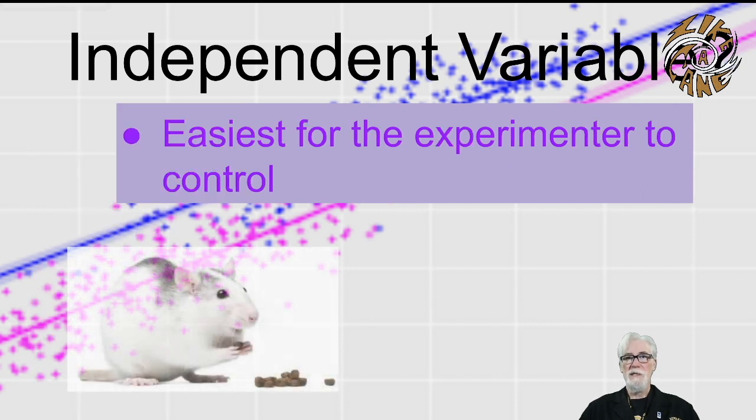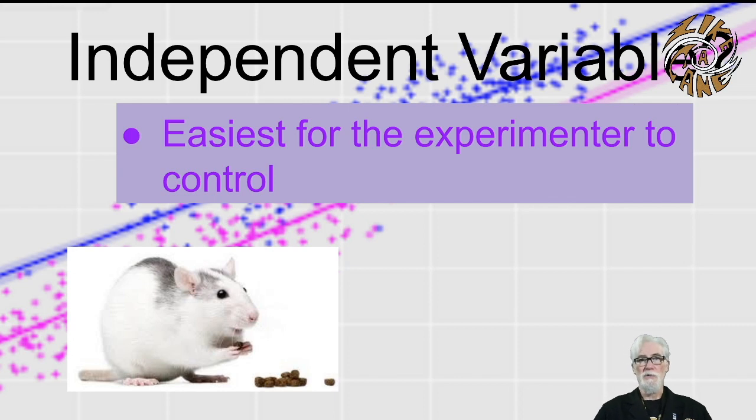Sometimes we choose the independent variable based on which is easiest for the experimenter to control. For example, if you wanted to study the effect of diet on the size of a rodent, it wouldn't make much sense to just observe many rodents and then try and work backwards to figure out what their diet happened to be.